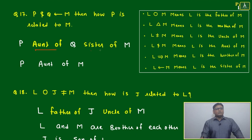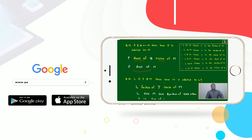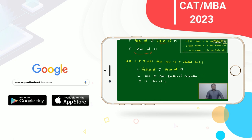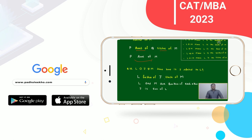Question 17: Based on the same thing, we'll copy paste. P is the aunt of M, and similarly we can make: L is the father of J, J is the uncle of M, L and M are brother to each other, J is the son of A.